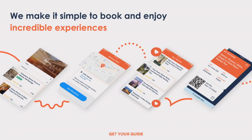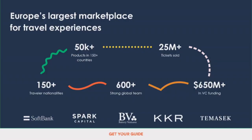Get Your Guide is one of the leading online business-to-customer platforms for booking incredible experiences — like walking tours and tickets to famous sites like the Eiffel Tower. We have customers from more than 150 countries, more than 50,000 products available, and have sold more than 25 million tickets. We've also gathered some funding along the way, recently received a huge funding round, and I have more than 600 colleagues around the world.